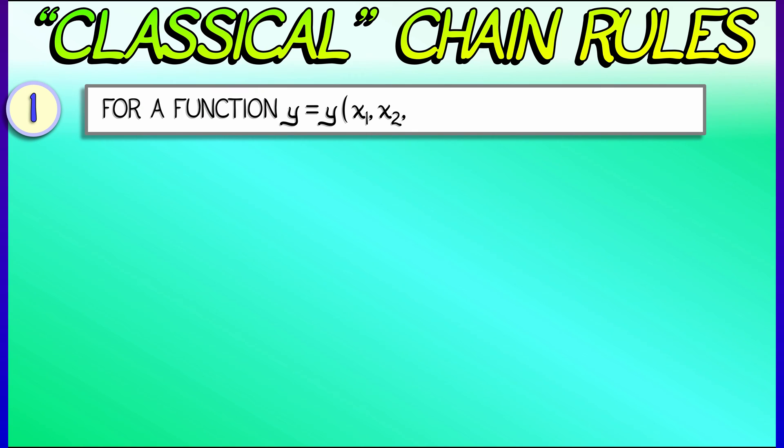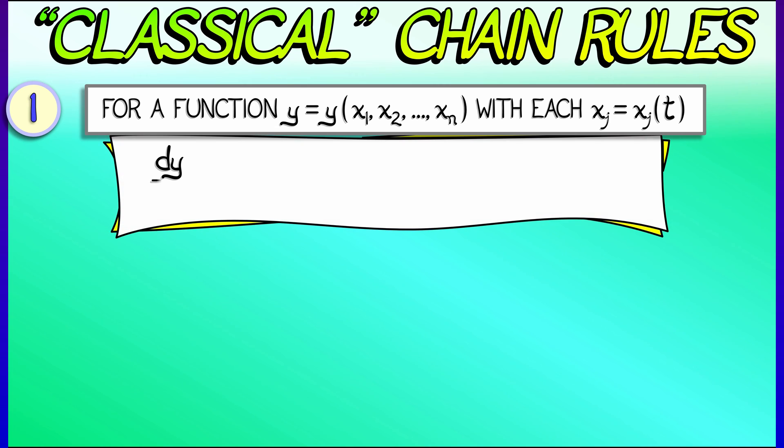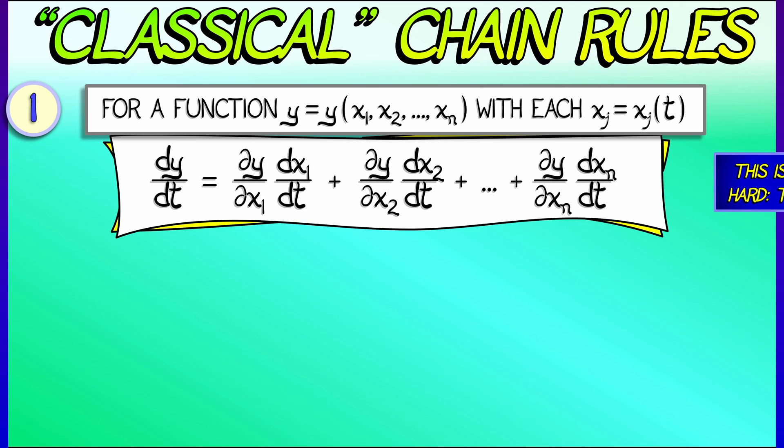Let's look at some classical chain rules that old textbooks say you have to memorize. They'll say, well, if you have a function y that depends on many inputs x1, x2 up through xn, and each of those depends on time, then the derivative of y with respect to t is really the sum of partials of y with respect to the x's times the derivative of those x's with respect to t's.